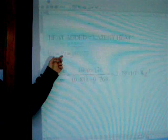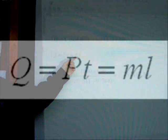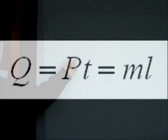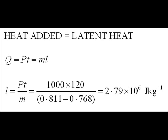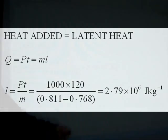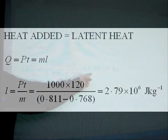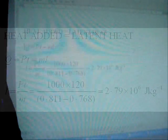Q is the heat added, which is equal to power times time, which is equal to the mass times specific latent heat. The final value is 2.79 times 10 to the power of 6 joules per kilogram.